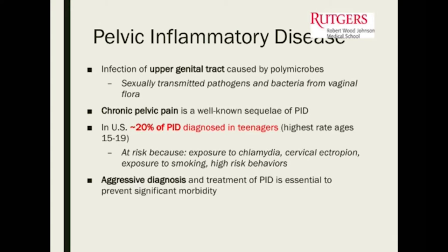In the U.S., 20% of PID is diagnosed in teenagers, with the highest rates in ages 15 to 19. If they haven't used safe sex practices or are not aware, or have multiple partners, they put themselves at risk for chlamydia, gonorrhea, and pelvic inflammatory disease.